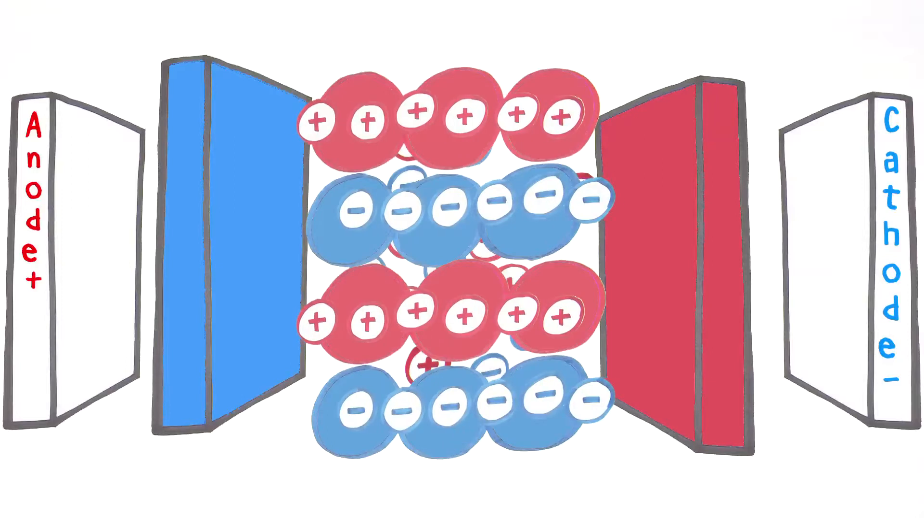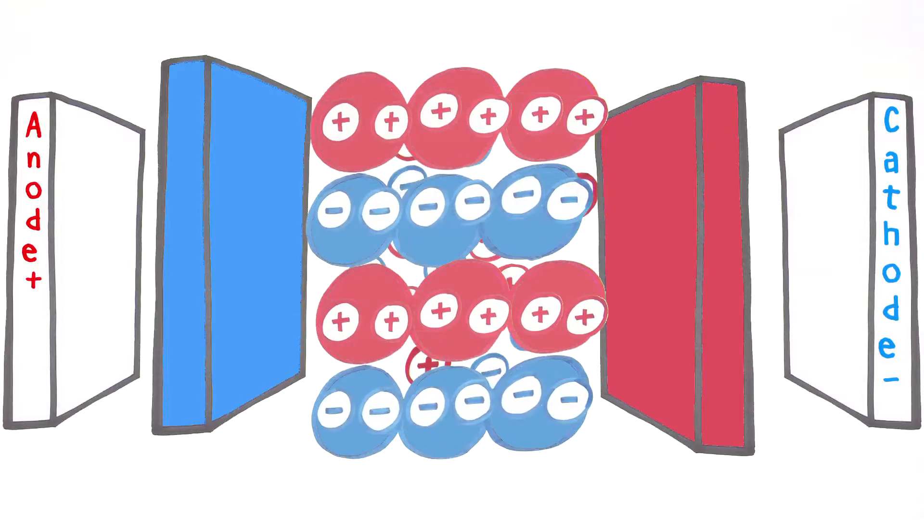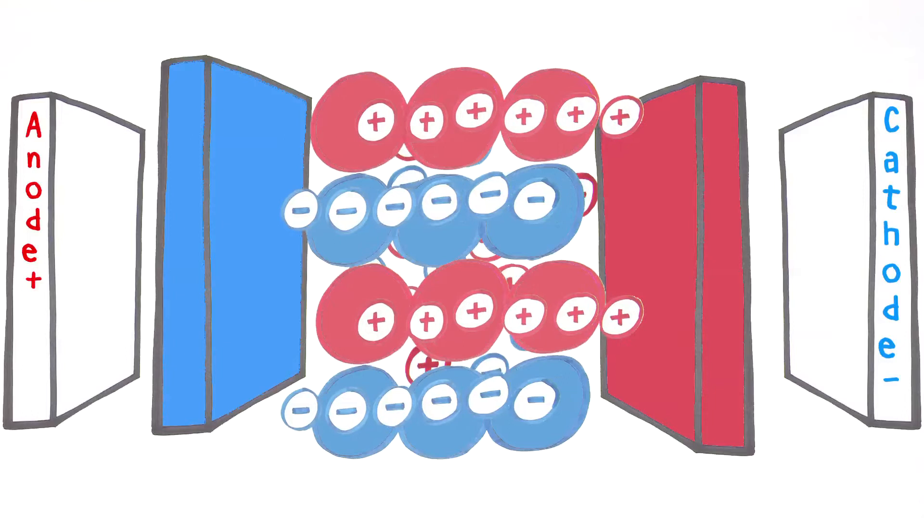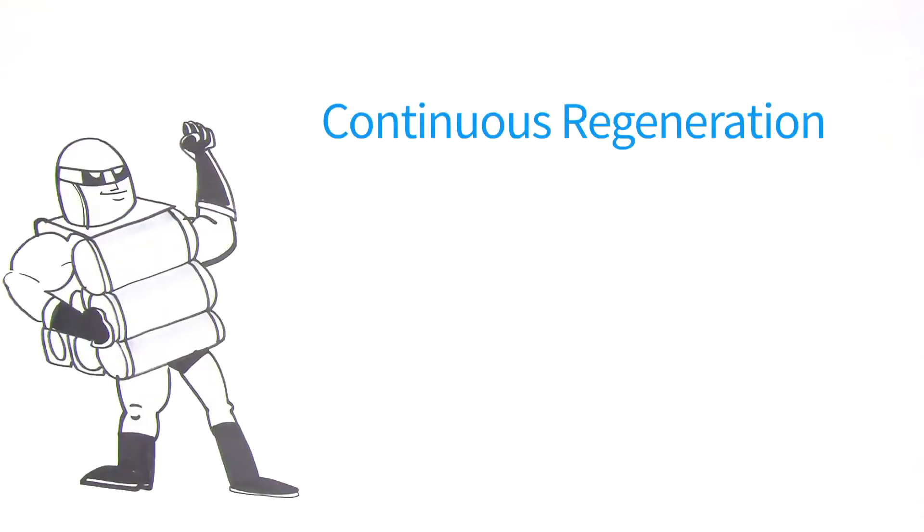As the water passing through the module becomes purer, an electrochemical process takes place that continuously reactivates the resins, creating the chemical regenerates in place so it is not necessary to handle hazardous chemicals.